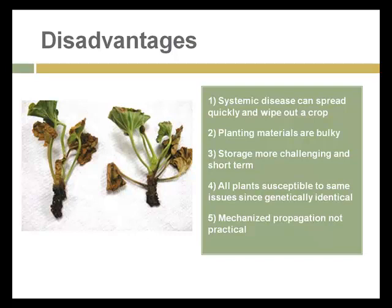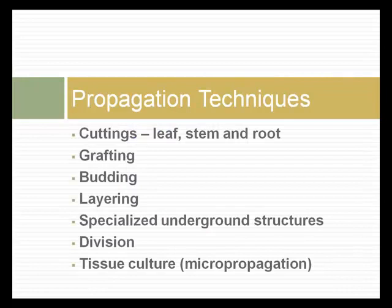Nevertheless, it's a very important method used widely in forestry, in fruit and vegetable production, and all sorts of landscape plants and ornamentals are produced using these techniques. Here is a listing of the propagation techniques we'll be talking about: cuttings, which can be made from leaves, stems, and roots.